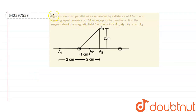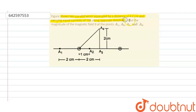The question says: a figure shows two parallel wires separated by a distance of 4 centimeters and carrying equal current of 10 ampere along opposite directions. Find the magnitude of magnetic field B at the points a1, a2, a3, and a4.